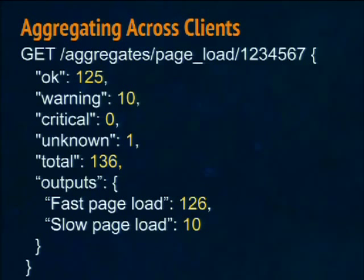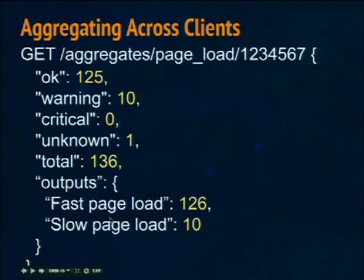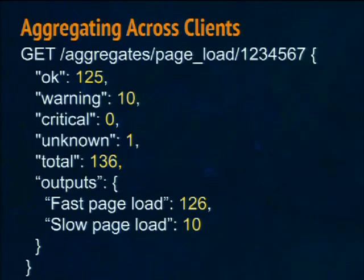You can aggregate across clients by marking a check as something you want to aggregate: 125 clients are OK, 10 are warning, 1 is unknown. If you have events that happen all at once or want a higher-level view, instead of each client escalating through PagerDuty individually, you can use this facility to aggregate the results across your entire fleet. Then you can have a check that says 'let me know if more than two of my web servers are not functioning.' If your load balancer can take out crippled web servers, it's easy to write a check that says 'as long as I have more than a couple of good web servers, let me sleep through the night.'